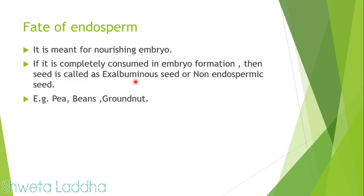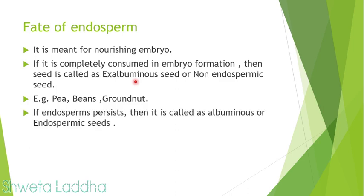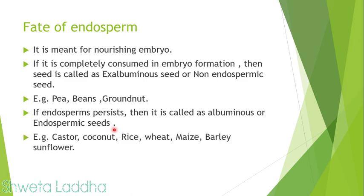In ex-albuminous seeds the food is stored in the cotyledon until the plant develops; they are also called cotyledonous seeds. In endospermic seeds, the endosperm persists; these are called albuminous or endospermic seeds. They also have cotyledons, but the cotyledons are papery and the entire food is stored in the endosperm. Best examples are castor and coconut — coconut has both liquid endosperm and white kernel endosperm.